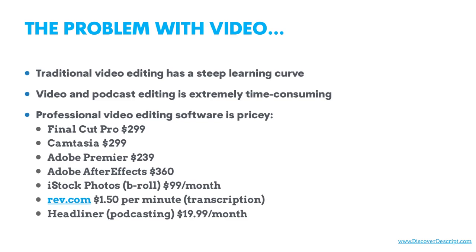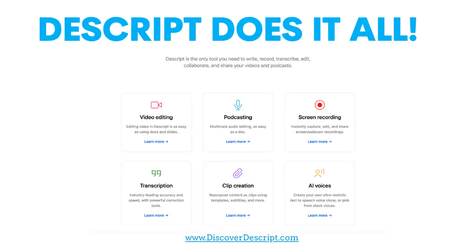So I use Final Cut Pro, which is 300 bucks; Camtasia is 300 bucks; Adobe Premiere, After Effects — all these things, and I've purchased all of them, believe me — get really expensive. And if you want to add stock photos or footage to your projects, then it gets really expensive, 99 bucks a month or up. So the great thing about Descript is it eliminates the need for all of those tools. I use Final Cut Pro now, which I've used for 25 years, but I use it very sparingly because I can do so much on Descript.